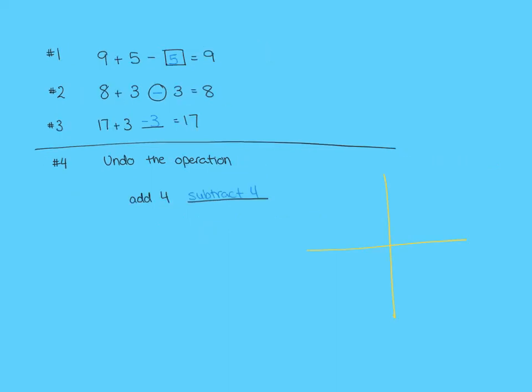Just to give you a quick reminder, the opposite of adding is subtracting. So those are the two you would use to undo each other. And the opposite of multiplying is dividing. So those are the two operations you would use to undo each other.